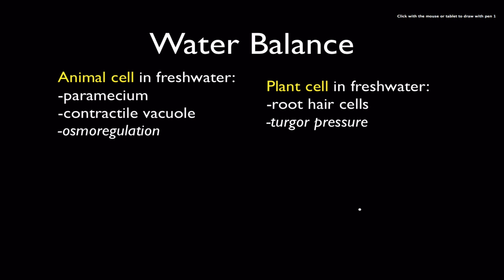All this contributes to water balance — all cells have to deal with this as part of their homeostasis. For example, a paramecium lives in a freshwater environment, so its cytoplasm is hypertonic compared to the environment, meaning it's living in a hypotonic environment. It has evolved structures called contractile vacuoles that constantly pump extra water back out of the cytoplasm. This is part of the cell's osmoregulation — the way a single-celled or multi-celled organism controls its water balance, with 'osmo' referring to water and 'regulation' keeping it balanced.